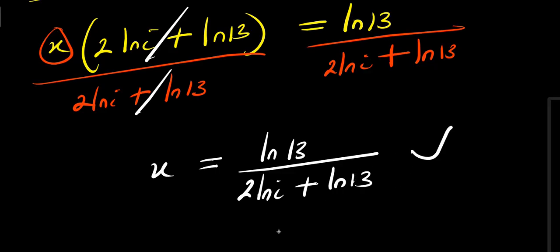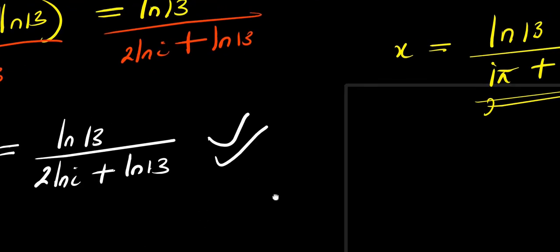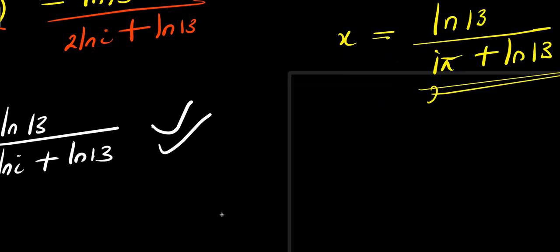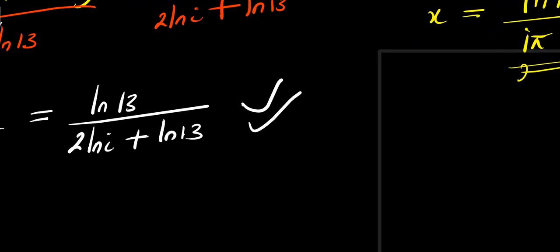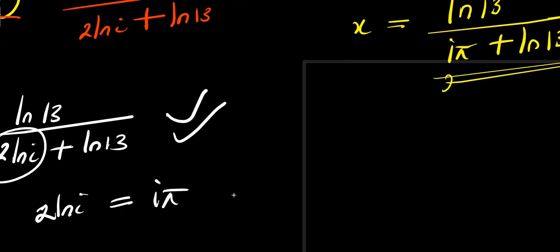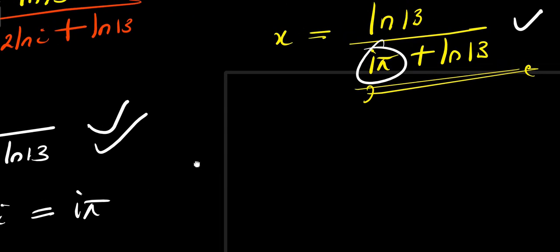Now look at the difference here. This answer is also very correct, just like the first one. The difference is that here we have 2 times natural log of i, which equals i times pi, as in the other method. But aside from that, everything remains the same.